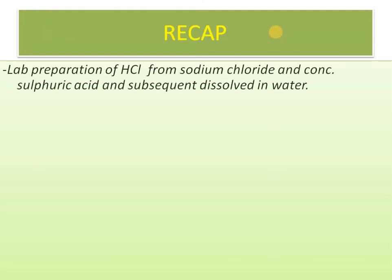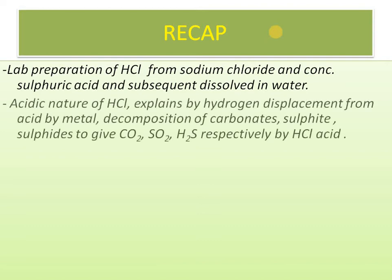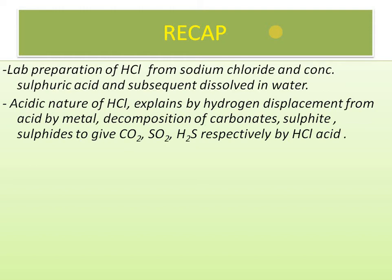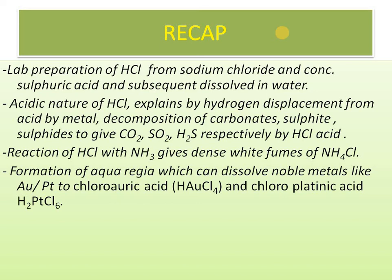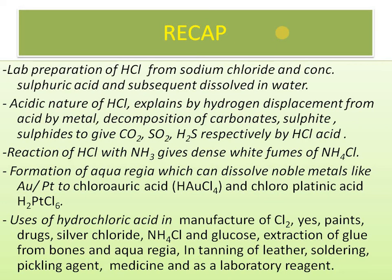Let us revise what we have covered. We can prepare hydrogen chloride gas from sodium chloride and concentrated sulfuric acid, followed by dissolving in water. The acidic nature of HCl is explained by hydrogen displacement from acid by metals like zinc, decomposition of carbonates like NaHCO₃, sulfides like Na₂SO₃, and sulfides like ZnS. HCl with ammonia gives dense white fumes, and aqua regia — three volumes of concentrated HCl with one volume of concentrated HNO₃ — dissolves noble metals like gold and platinum to form chloroauric acid and chloroplatinic acid.